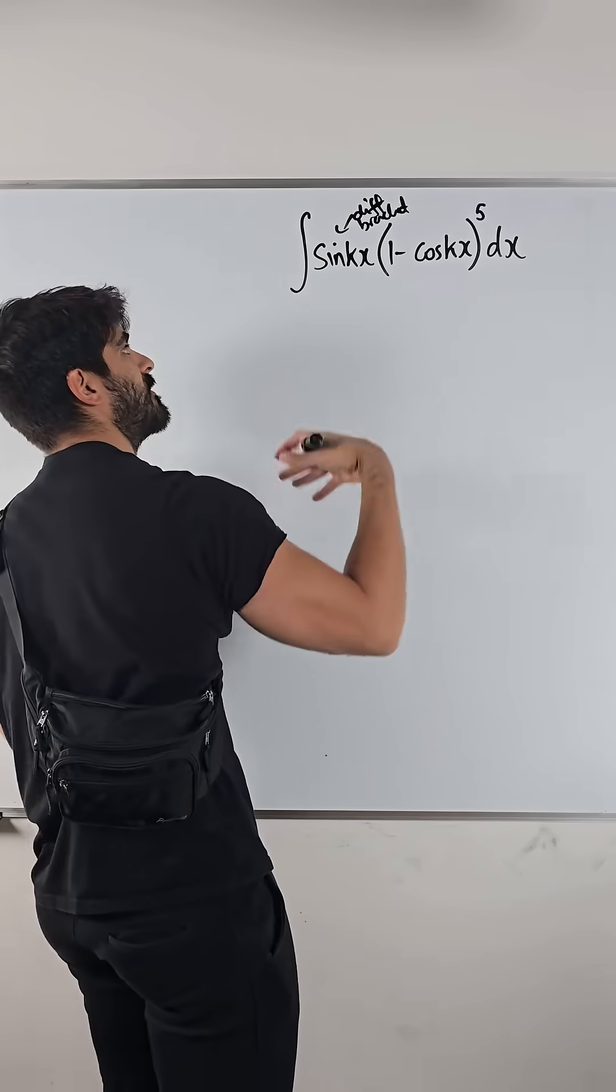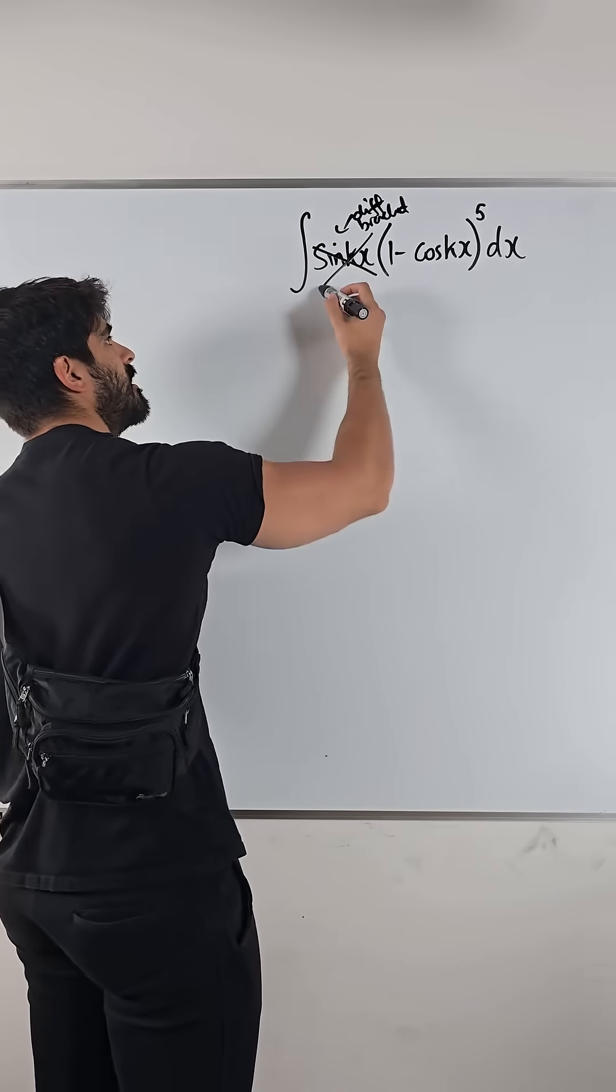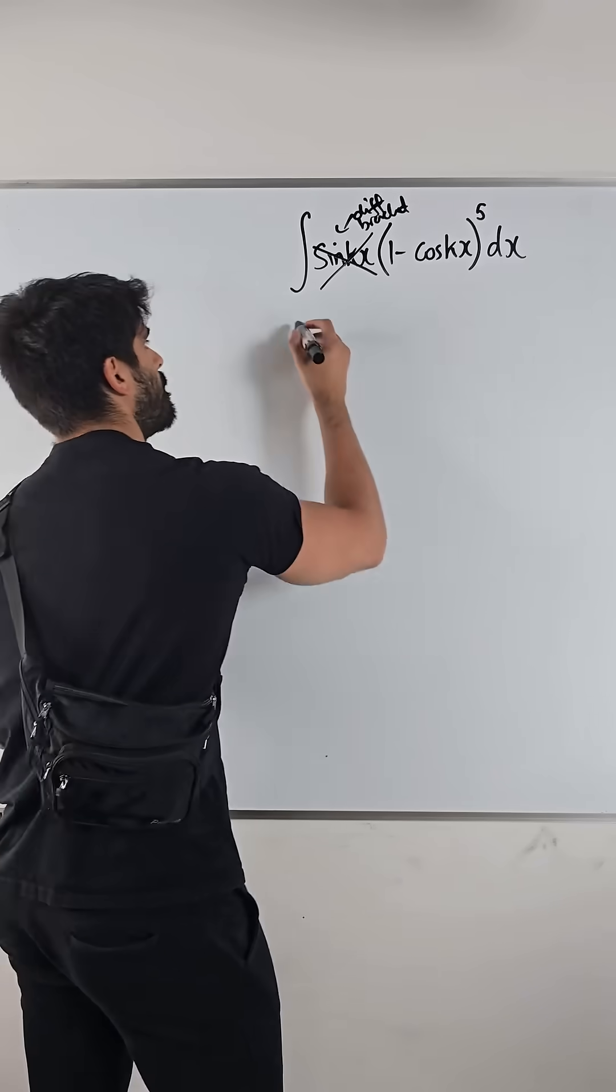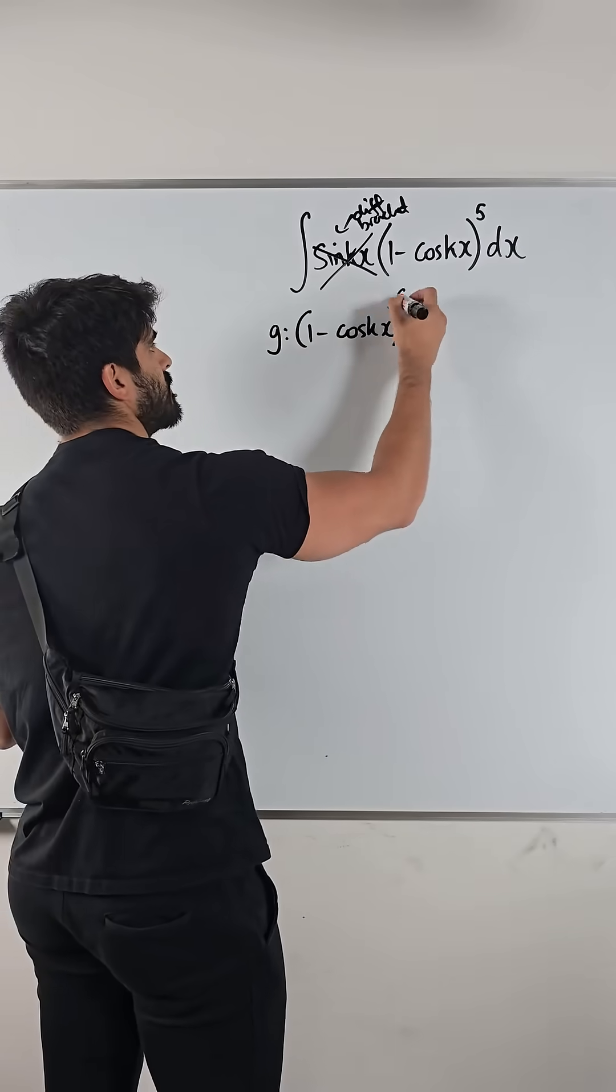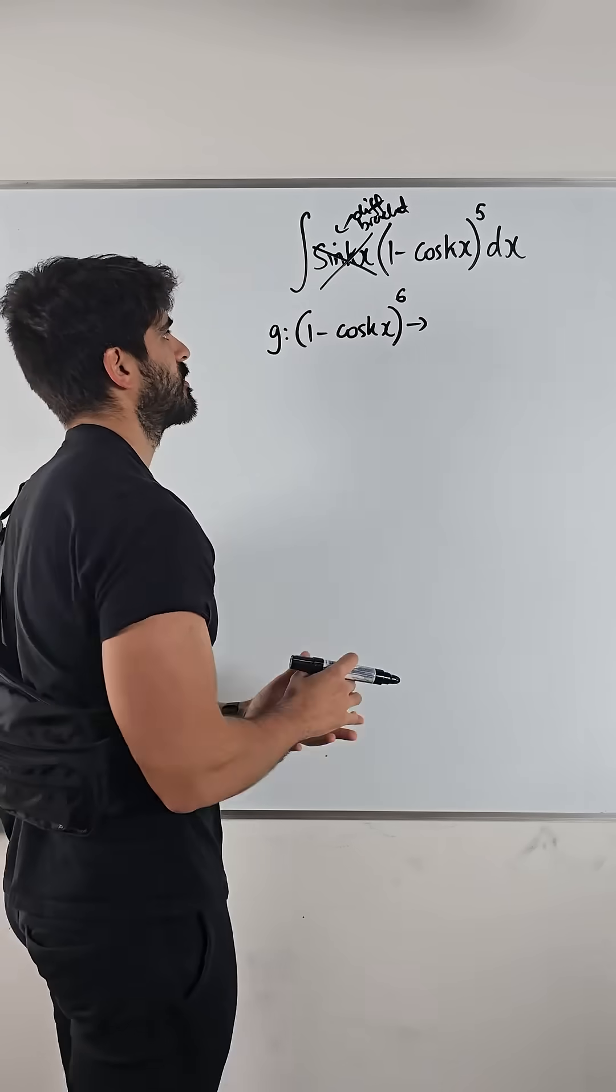So in that process of integration, that will disappear and the power function will go up by one. So my guess is (1 - cos kx) to the power of six. But then we differentiate that to check our answer.